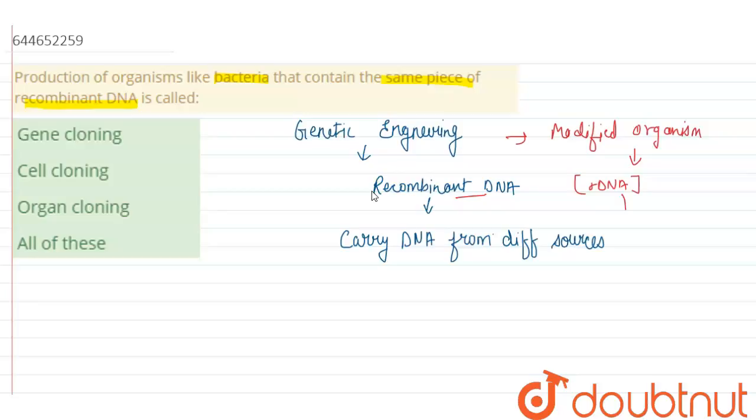After inserting this recombinant DNA, it becomes part of the host cell, and this DNA replicates into the host cell, or we can say multiplies itself into the host cell. So this process is called cloning.